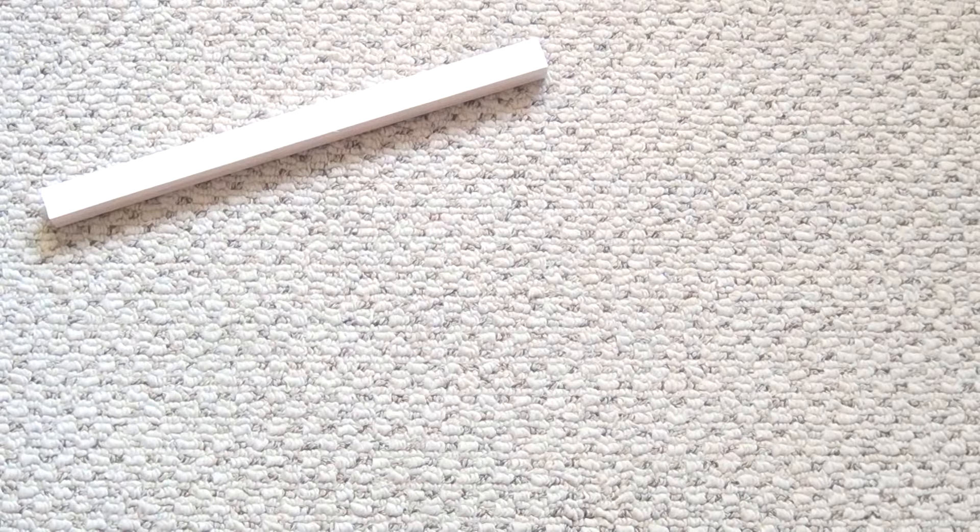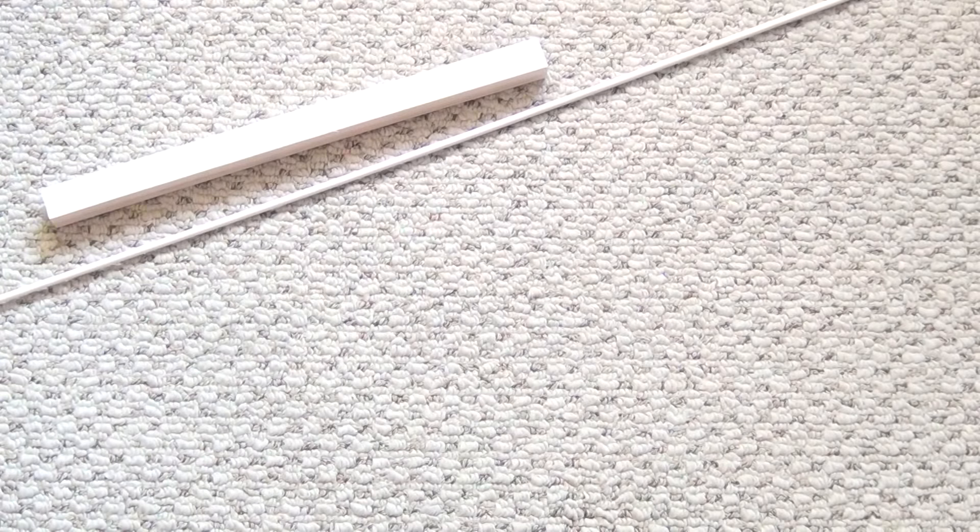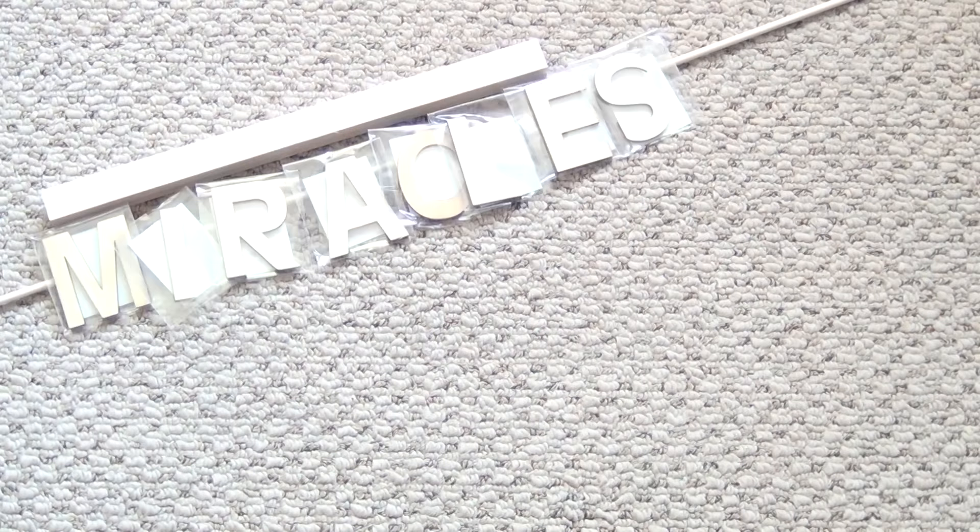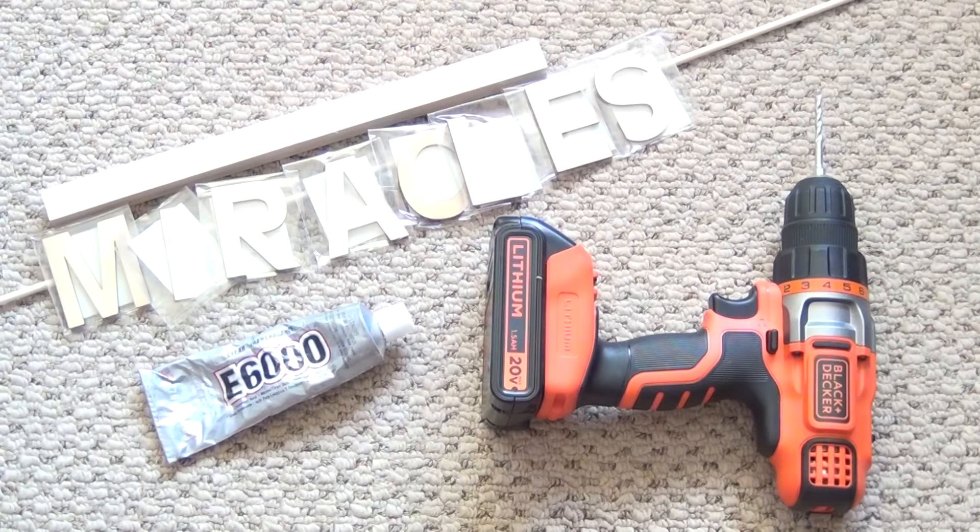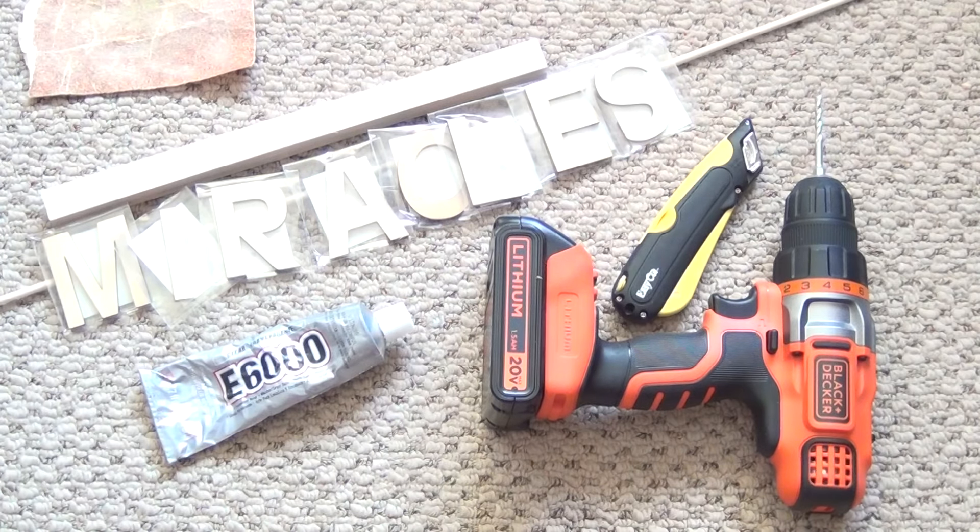For this project you'll need a short square dowel, a long small gauge round wooden dowel, wooden letters to spell miracles, a drill with drill bits, E6000, sandpaper, and a utility knife.